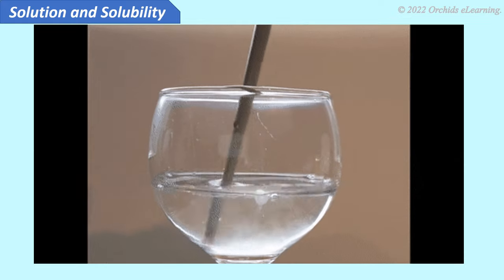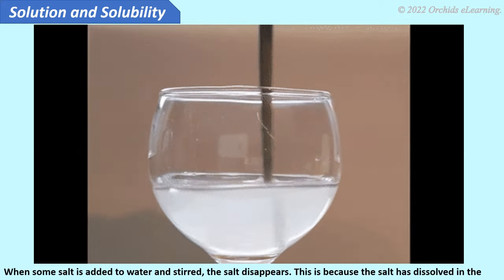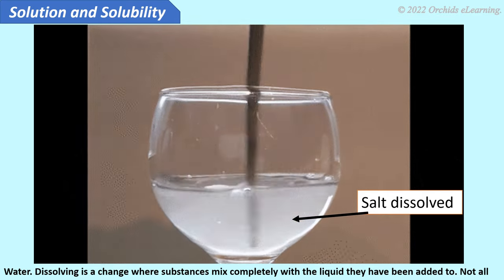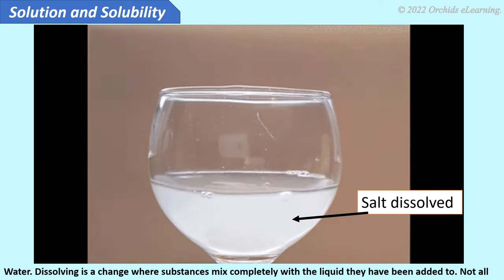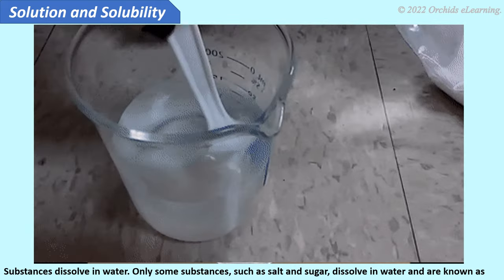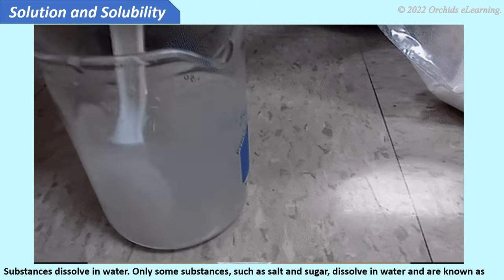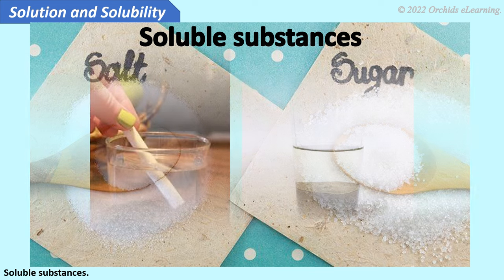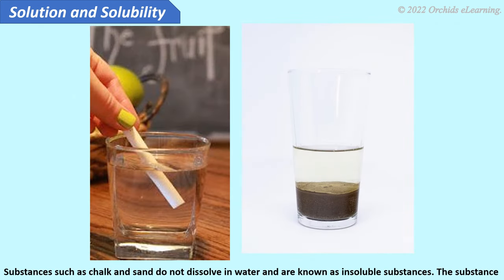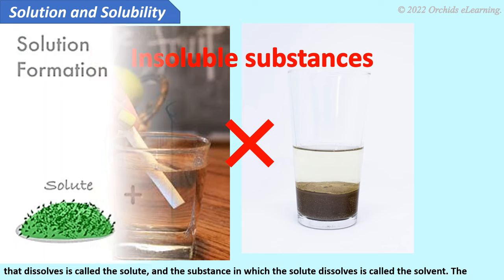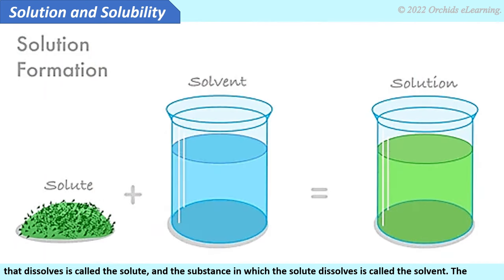Solution and solubility. When some salt is added to water and stirred, the salt disappears because it has dissolved in the water. Dissolving is a change where substances mix completely with the liquid they have been added to. Not all substances dissolve in water. Only some substances such as salt and sugar dissolve in water and are known as soluble substances. Substances such as chalk and sand do not dissolve in water and are known as insoluble substances. The substance that dissolves is called the solute, and the substance in which the solute dissolves is called the solvent. The resulting mixture is called a solution. For example, sugar plus water equals a sugar solution.